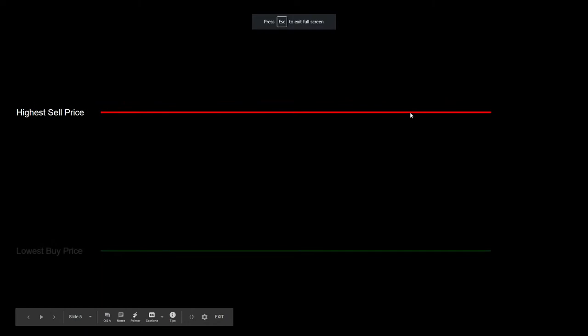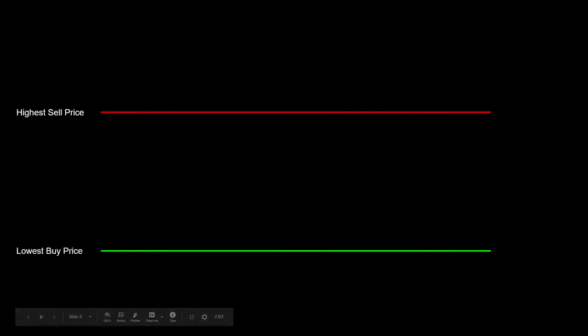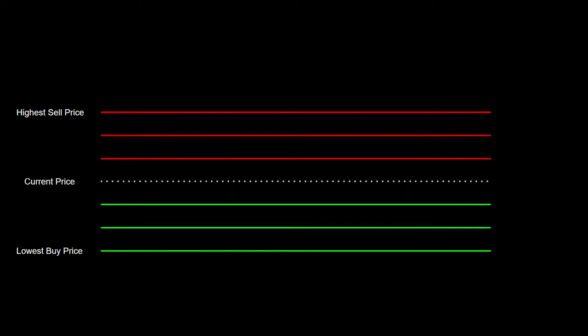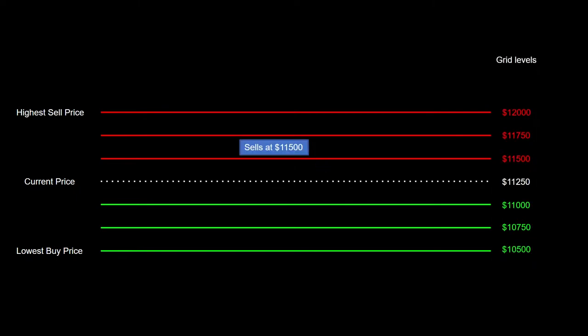The idea of the bots is that you first set the trading range within which they are going to trade on your behalf. You have the high sell price, which is the upper limit, and the lowest buy price, which is the lower limit. Within this trading range you have sell limit orders and buy limit orders, also known as grid levels. The bot takes advantage of market swings as the price goes down and up, buying low in order to sell later at a higher price.